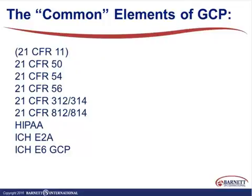Most of us are familiar with the common elements of GCP. 21 CFR Part 11 — I have that in parentheses because we still kind of struggle with that. The FDA has told us they're not necessarily going to cite us for departures from 21 CFR Part 11 for electronic records and electronic signatures. What they have been doing is citing us for failure to maintain adequate and accurate records. We have investigators that have received warning letters because they didn't have disaster recovery or backup for their systems, linking it back to not maintaining those adequate and accurate records.